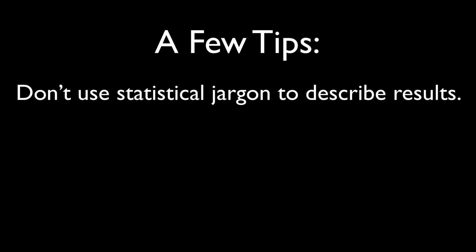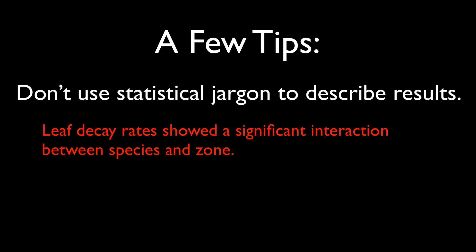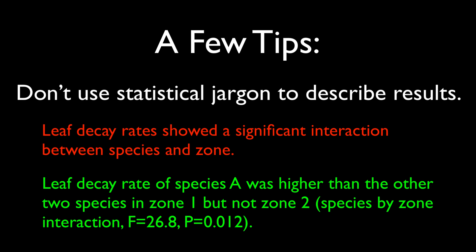Don't use statistical jargon to describe results. For example, leaf decay rates showed a significant interaction between species and zone. This jargony statement doesn't tell the reader what happened. Instead, say, leaf decay rate of Species A was higher than the other two species in Zone 1 but not in Zone 2, Species-by-Zone interaction, followed by the statistical results.